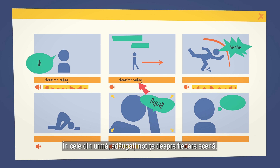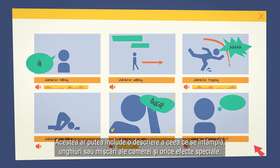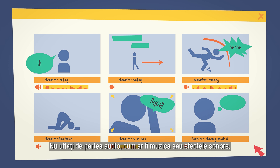Finally, add in any notes about each scene. This might include a description of what's happening, camera angles or movement, and any special effects. Don't forget about audio like music or sound effects.